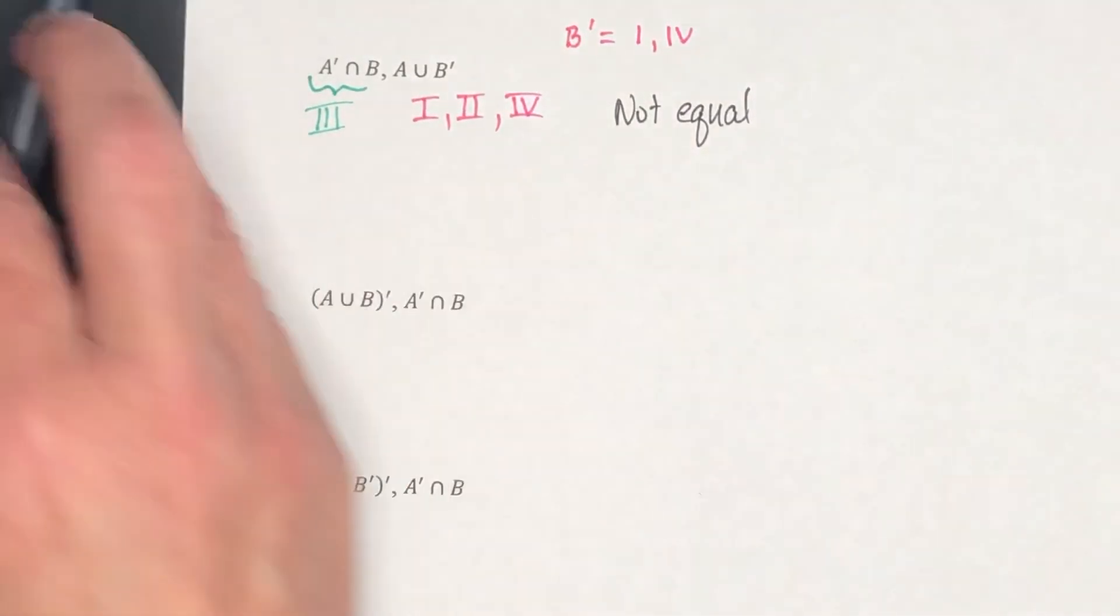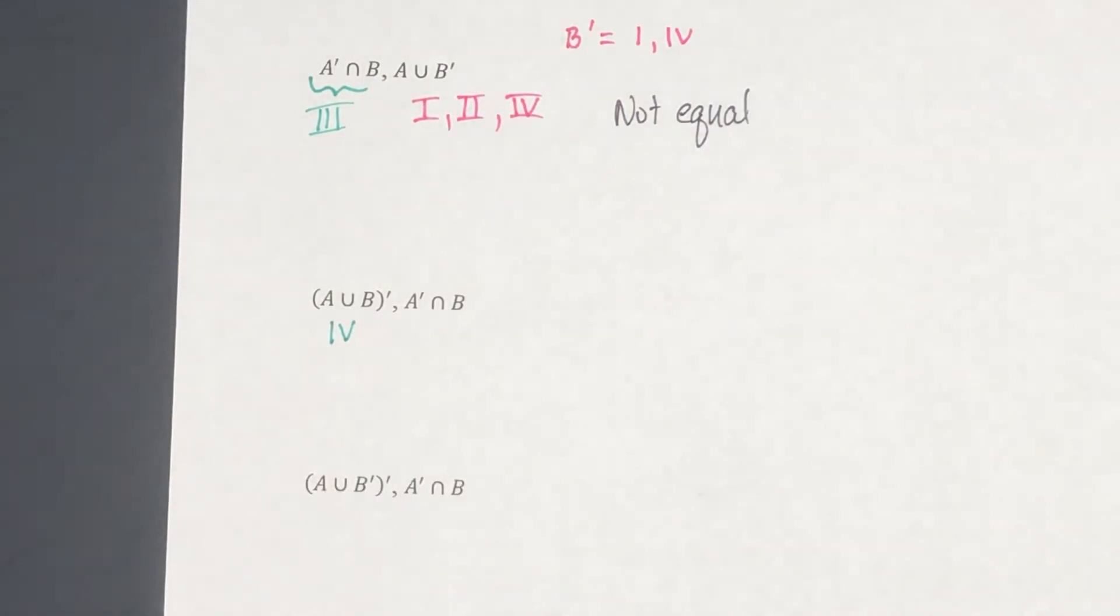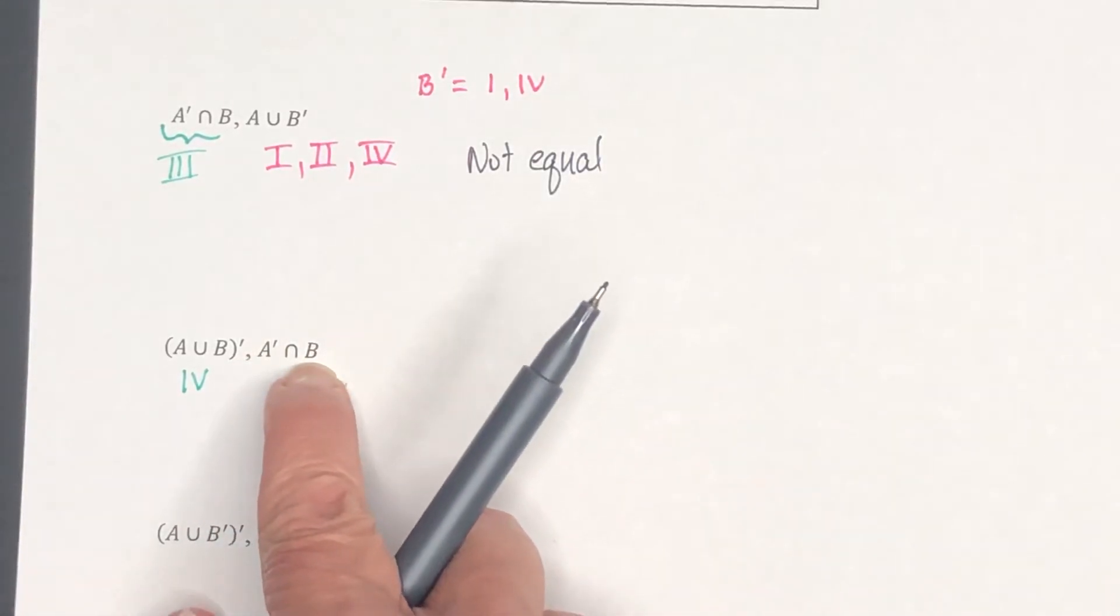So this part right here, this is just region 4. Okay, now the complement of A intersected with B.